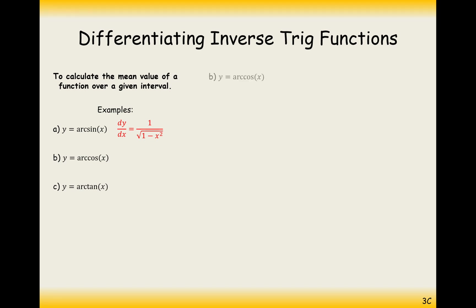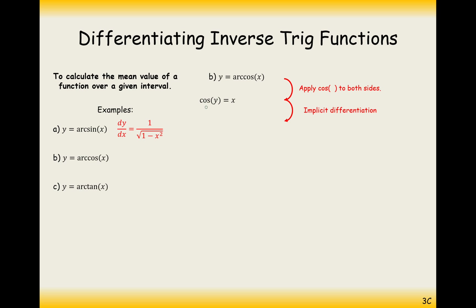Moving on to arc cos — it's done in a very similar way. The first thing I'll do is get rid of the arc by cosing both sides, which moves cos onto the other side of the equation. Then I'll apply implicit differentiation: when differentiating something with y in it, differentiate normally and multiply by dy/dx. Differentiating the right-hand side, x turns into 1.